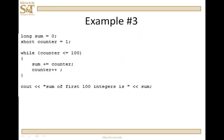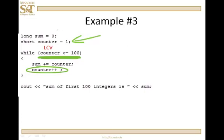Here we initialize a variable 'sum' to 0 as a long integer, and a short 'counter' initialized to 1, then jump into a while loop. While counter is less than or equal to 100: sum += counter, counter++. The loop control variable is 'counter' — initialized here, checked here, updated right there. It starts at 1, increases by 1 each iteration, and is added into sum. When counter gets to 101, the condition is false and we jump out to the output statement: the sum of the first 100 integers. This loop is accumulating the sum of the positive integers from 1 to 100.